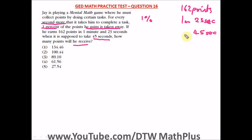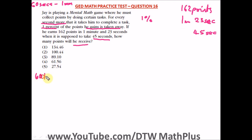He was supposed to take 45 seconds, but he did it in 1 minute 23 seconds. First, let's convert 1 minute 23 seconds to seconds. We know 60 seconds make 1 minute. So we add 60 plus 23, which gives us 83 seconds. The total seconds he took is 83 seconds.